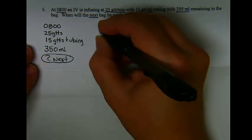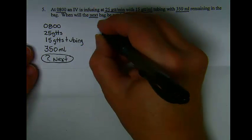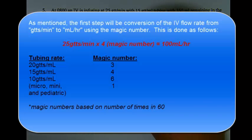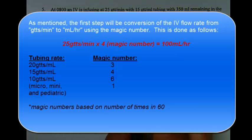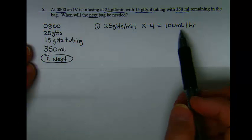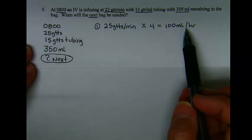The first thing that has to be done in order to calculate this problem is the flow rate and tubing used need to be combined in order to figure out the milliliters per hour. So 25 drops per minute is multiplied by 4 to establish the flow rate at 100 milliliters per hour.